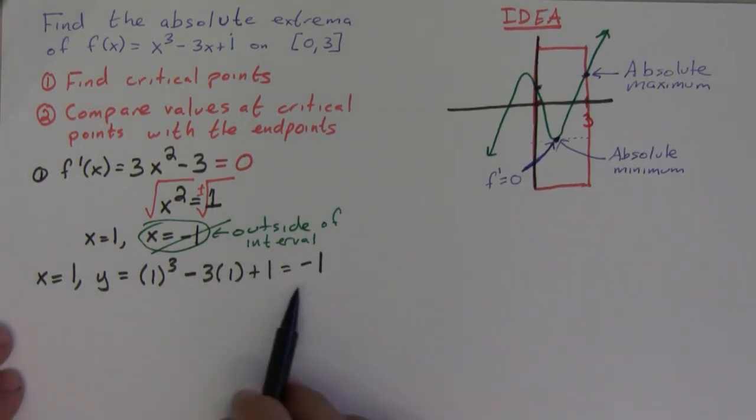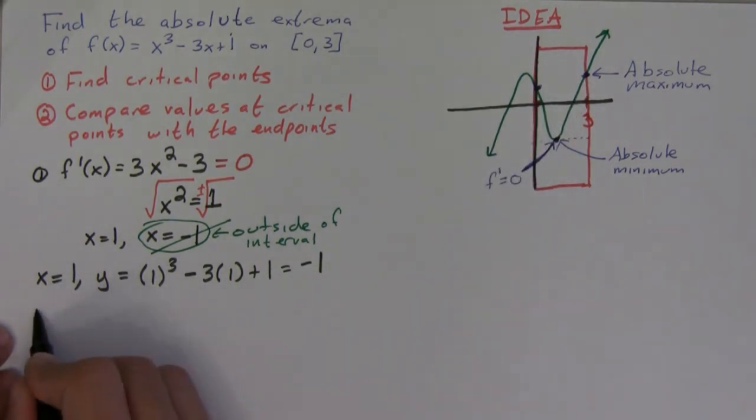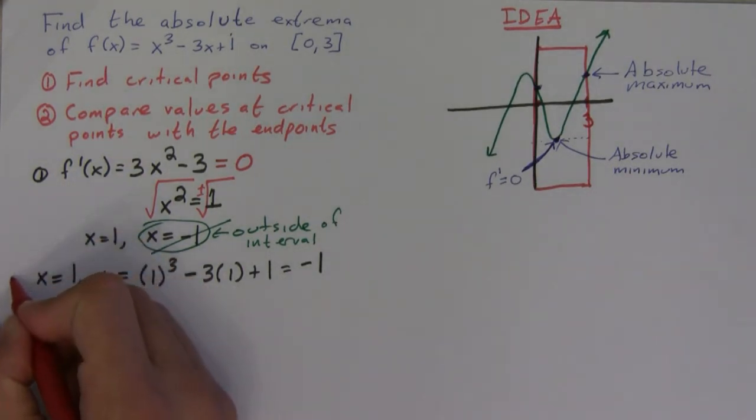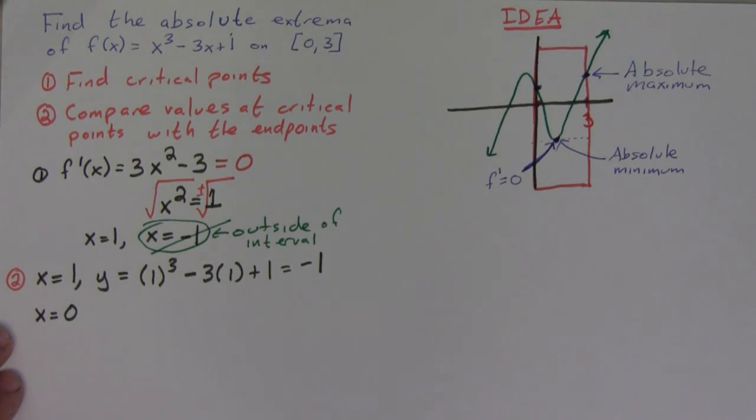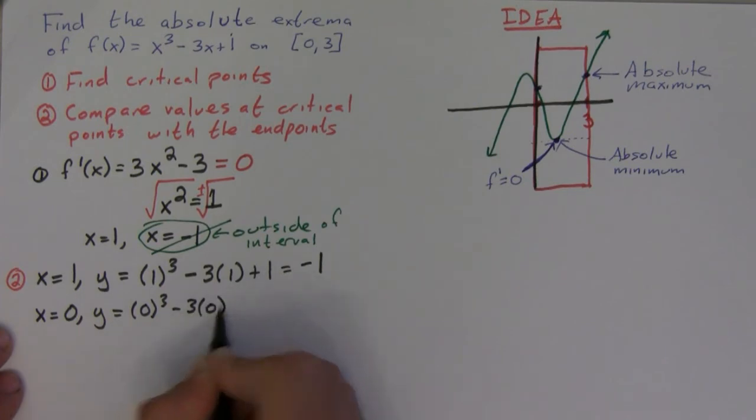Okay, and then remember our idea is that we compare this value with the endpoints, so we have to figure out the values of the function at the endpoints. So this is now the second step. When x is equal to zero, y is equal to zero cubed minus three times zero plus one, is equal to one.